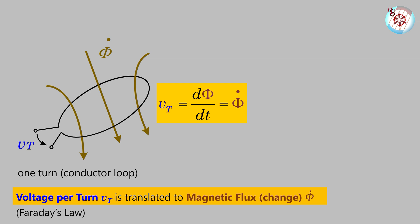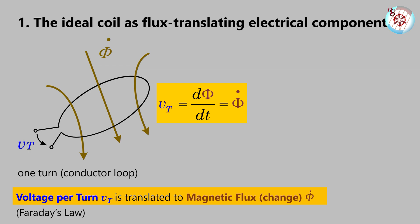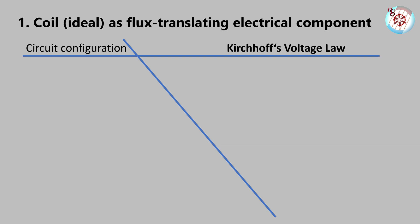Let's have a deeper look at it to clarify the situation. Part one: the ideal coil as flux-translating electrical component. We return to the beginning. We already know that you can't apply voltage to a short circuit. Using Kirchhoff on this shows the situation: finite voltage across zero resistance leads to infinite current. There is voltage in this loop, but it apparently does not add up to zero.